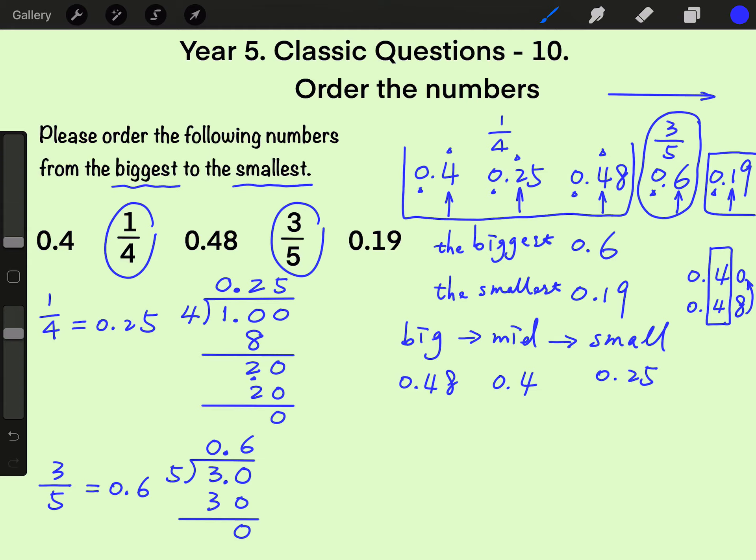Now, from the biggest to the smallest: 0.6 and then 0.48, next 0.4, then 0.25, and the smallest 0.19. 0.6 actually is three fifths, 0.25 is one quarter. So, final answer from the biggest to the smallest.